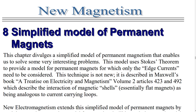Chapter eight is the simplified model of permanent magnets. Now I'm not the person who really invented this — I'm just the person who made it practical. If you look at Maxwell's A Treatise on Electricity and Magnetism, volume two, articles 423 to 492, he describes the interaction of magnetic shells — essentially flat magnets — as being analogous to current-carrying loops. So magnets are analogous to current-carrying loops; he was the first guy to describe this.